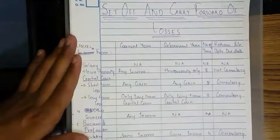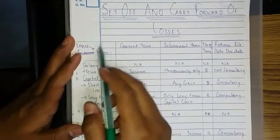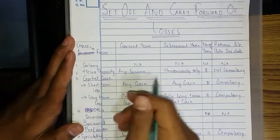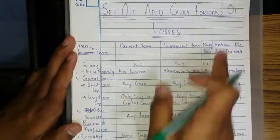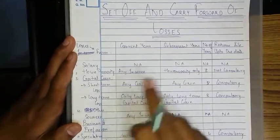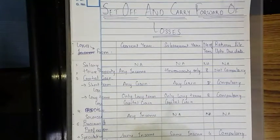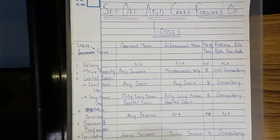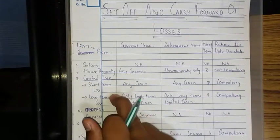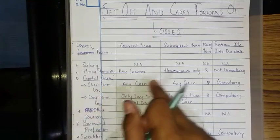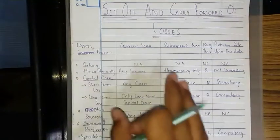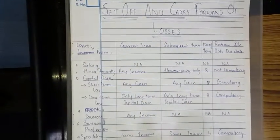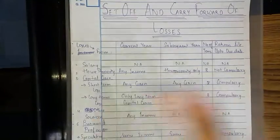Now, loss from capital gains. A short-term capital loss of the current year will be deducted from any capital gains — either short-term capital gain or long-term capital gain. In subsequent years also, it can be set off against any capital gain. There is no restriction that a short-term loss must be deducted only from short-term gain — it can be deducted from any gain because it is a smaller, short-term loss.